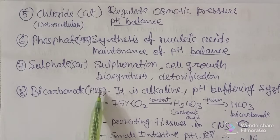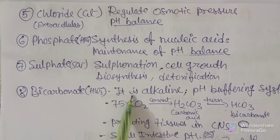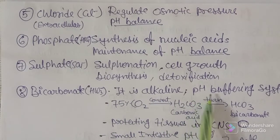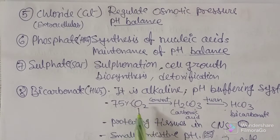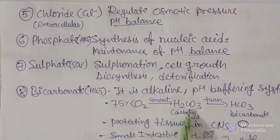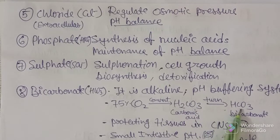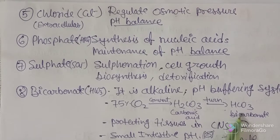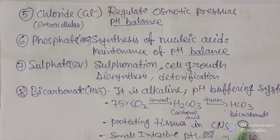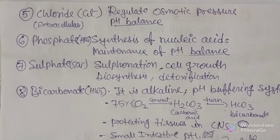Bicarbonate (HCO3-) is an anionic electrolyte that is alkaline in nature and serves as the pH buffering system of the body. 75% of carbon dioxide produced by the body is converted into carbonic acid (H2CO3), which then turns into bicarbonate (HCO3-). It also plays a major role in protecting tissues in the central nervous system (CNS) and regulating small intestine pH.